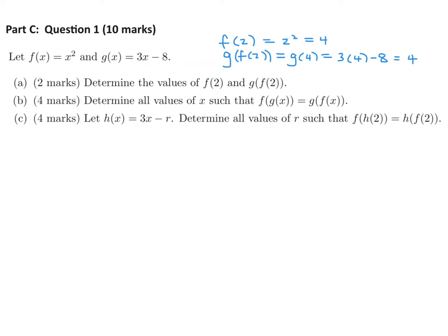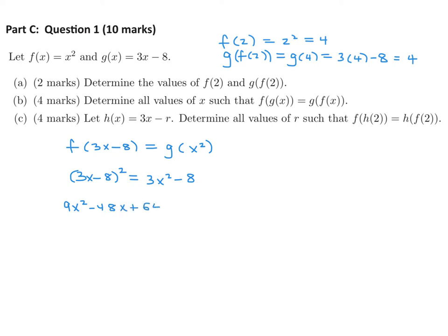Part B: Determine all values of x such that f(g(x)) equals g(f(x)). So f(g(x)) — g(x) is 3x minus 8 — and that equals g(f(x)), where f(x) is x squared. Plugging into f, that's (3x minus 8) all squared equals 3 times x squared minus 8, giving 9x squared minus 48x plus 64 equals 3x squared minus 8.